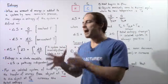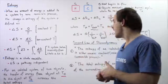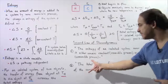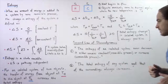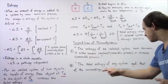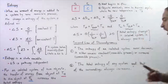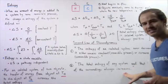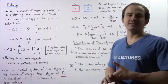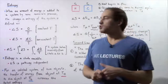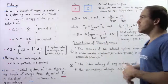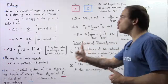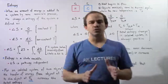Now because reversible processes don't actually exist — they would take an infinite amount of time — we can restate this version in the following way: the total entropy of any system plus the entropy of its surroundings always increases in any real process. This is how we define the second law of thermodynamics using the concept of entropy.